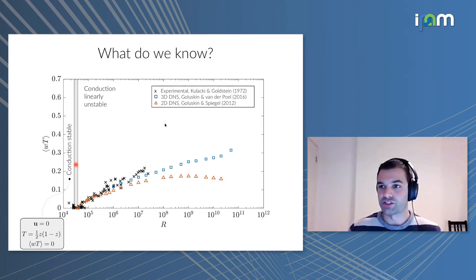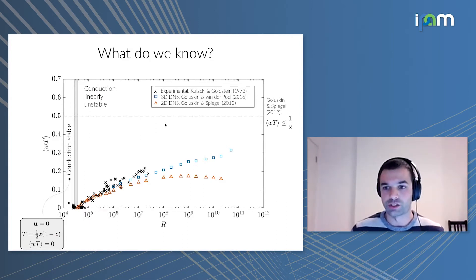In the middle here there's a gray area, and that's exactly what it is, because it's a region of bi-stability where we can have both convection and conduction. Conduction is linearly stable, so it's locally stable, and we get this bi-stability. We also have a rigorous bound, very much like Basil mentioned earlier, but it's a different type. In this case, David Goluskin and Ed Spiegel proved that no matter what the Rayleigh number is, this vertical heat flux cannot exceed a half. So no matter what this data does as we keep increasing R, we have to be below this dashed line.